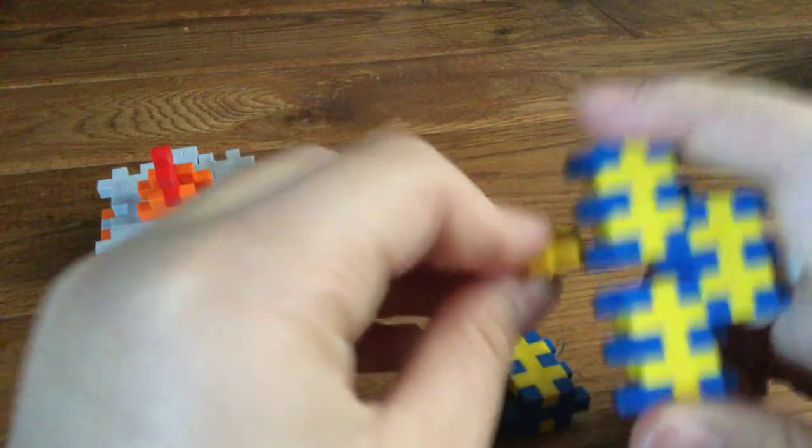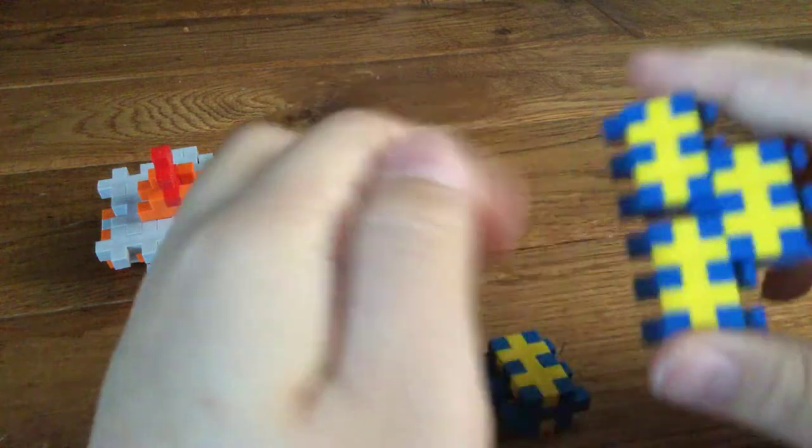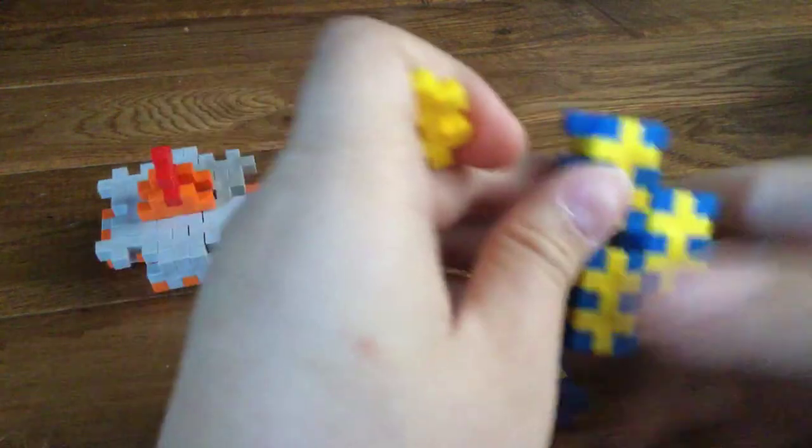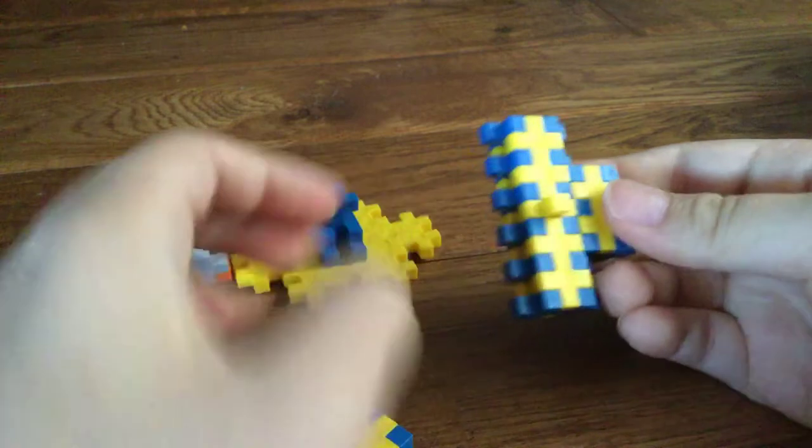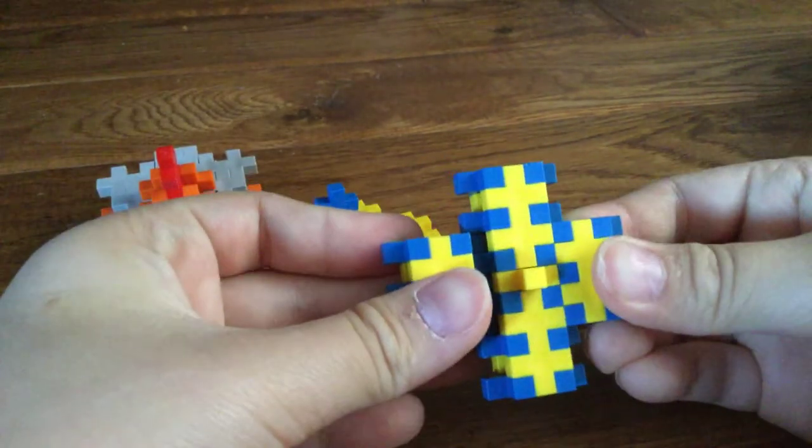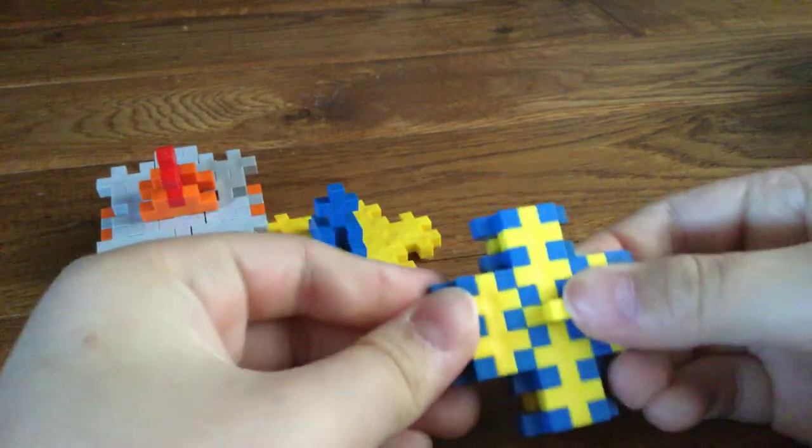Then you just take an extra plus plus block, and you combine two, three, like this. Then put the thing here, the block here, and then finish it off.